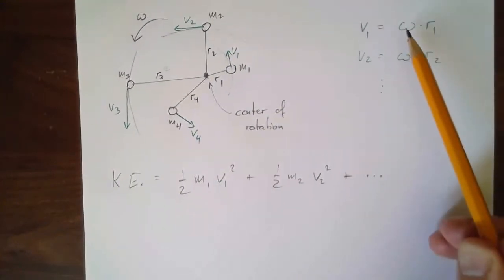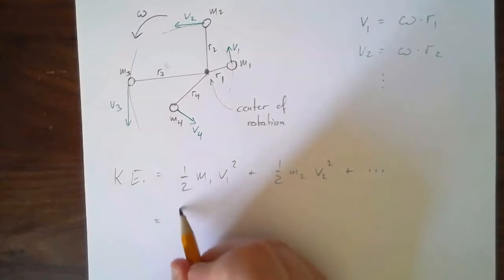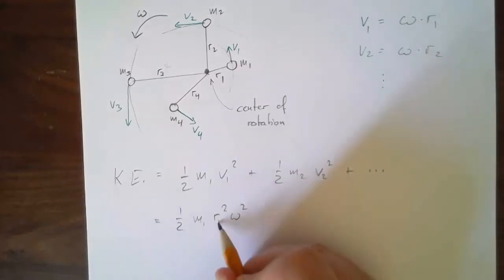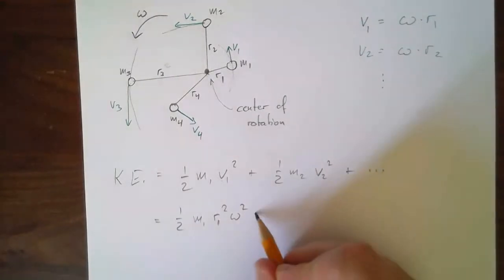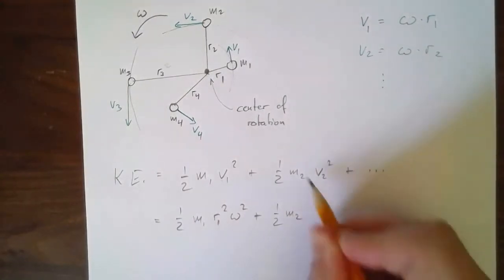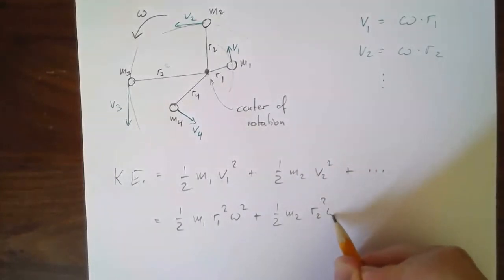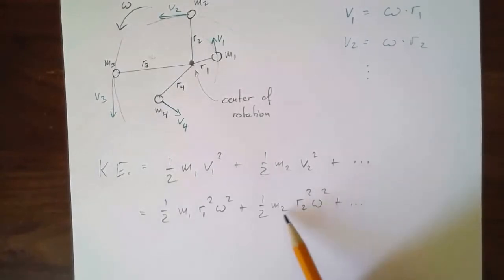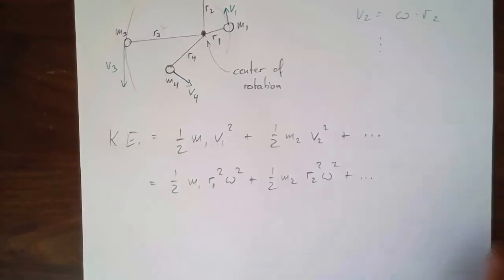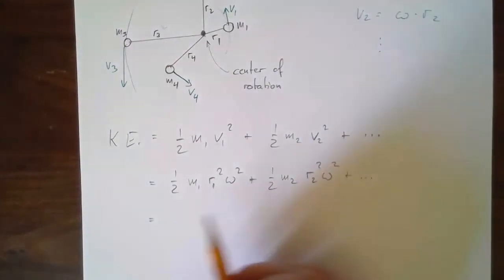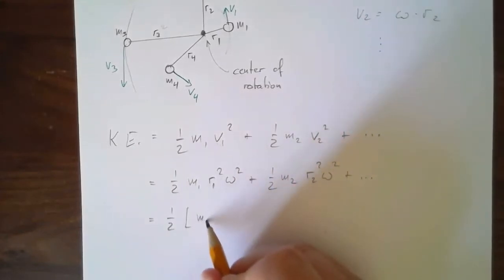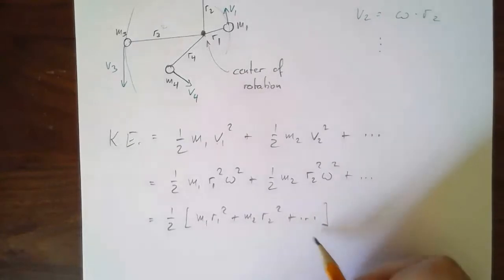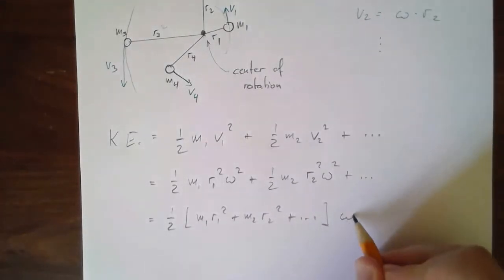Each of those speeds I can express in terms of omega and the radius. So we get ½m1·r1²·ω² + ½m2·r2²·ω² + ½m3·r3²·ω² and so on. Because omega is the same and ½ is the same, I can factor those out to get ½(m1r1² + m2r2² + m3r3² + m4r4²)·ω².